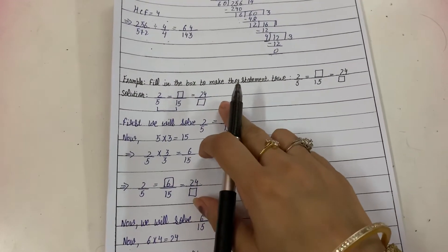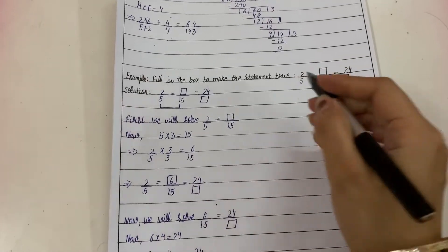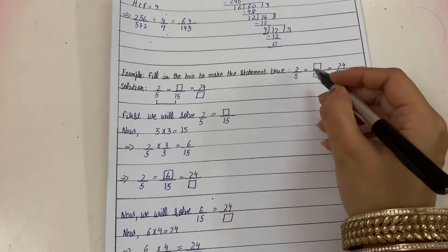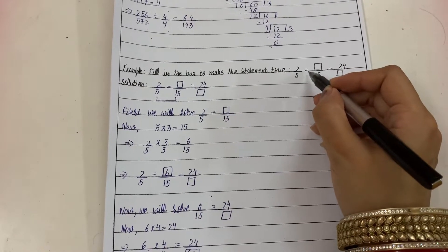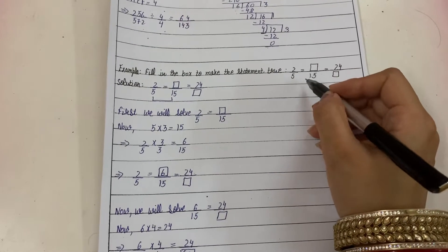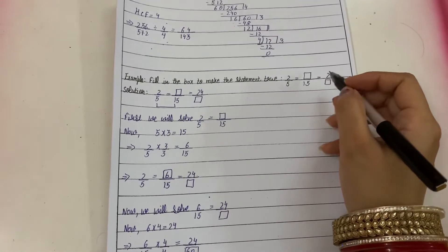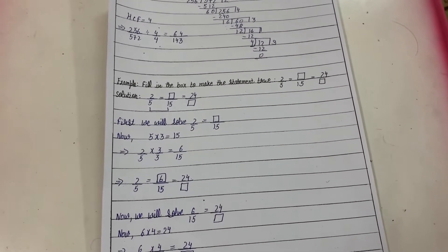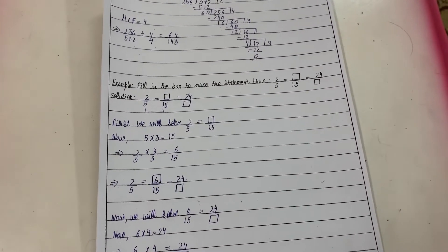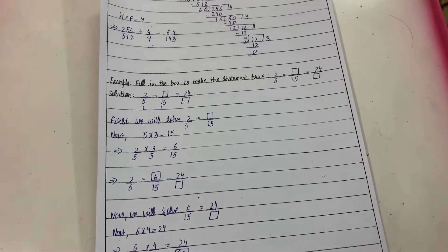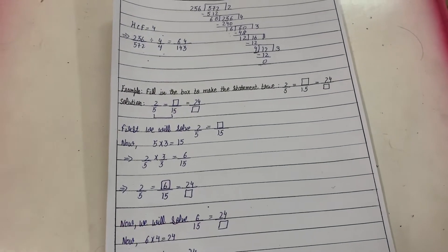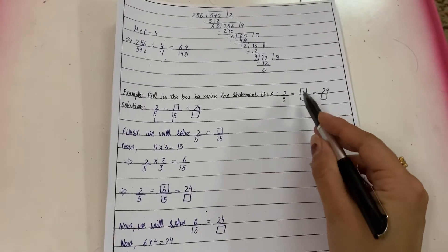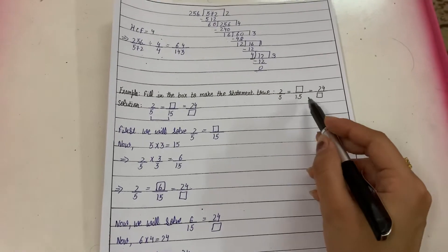Next: fill in the box to make the statement true. We need to find the value of the box so that the statement becomes true. Since there is an equal sign, these are equivalent fractions — fractions which are equal to one another. The problem is: 2 upon 5 equals box upon 15 equals 24 upon box. We need to find both box values.